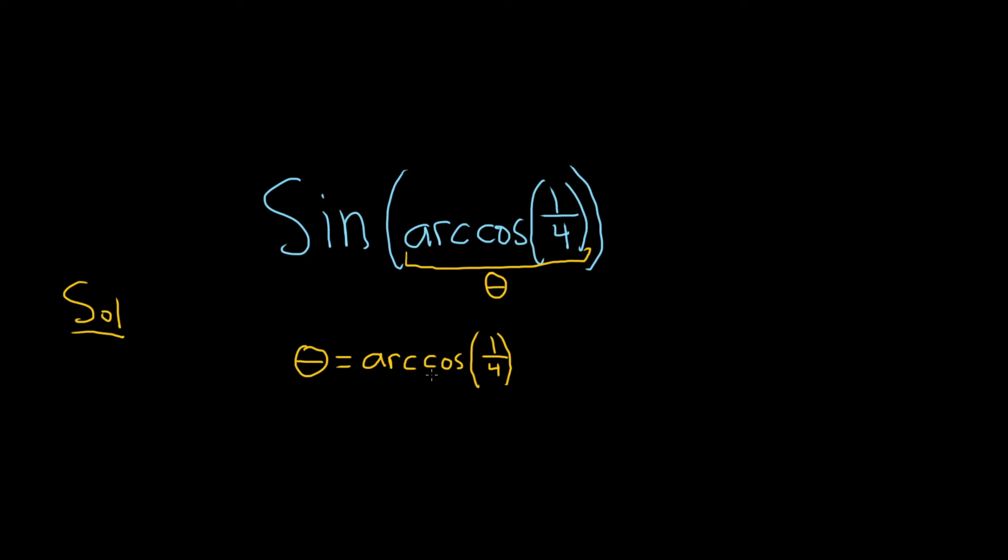And now we can get rid of this inverse notation, this arc cosine notation. The arc cosine is the inverse cosine. So it takes 1/4 and it sends it to theta. So to undo that we have to use the cosine function. So the cosine function takes theta and sends it back to 1/4.